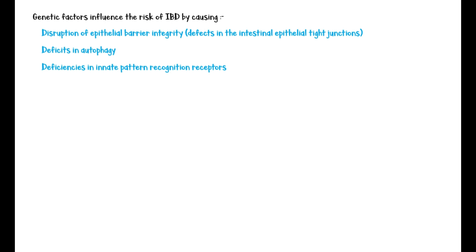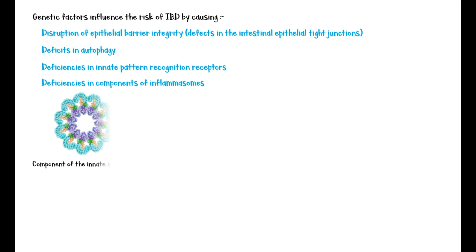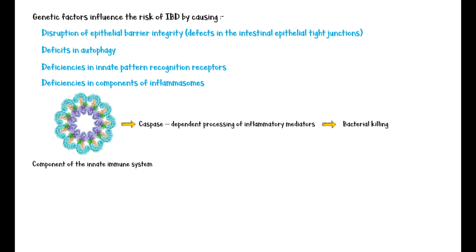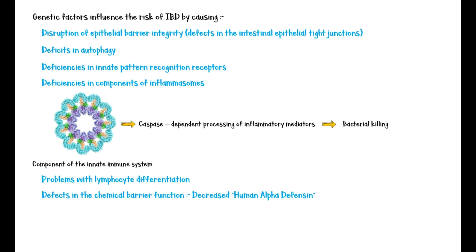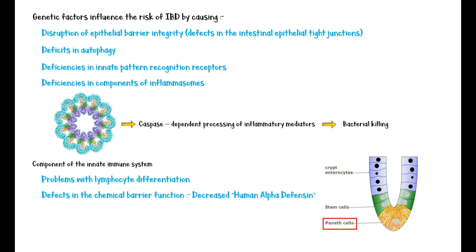Genetic factors also cause deficiencies in components of inflammasomes, which is part of the innate immune system and triggers caspase-dependent processing of inflammatory mediators to aid in bacterial killing. In addition, they lead to problems with lymphocyte differentiation and defects in the intestinal chemical barrier function, such as decreased human alpha-defensin levels. Alpha-defensin is a small peptide with antibacterial properties secreted by intestinal Paneth cells, and reduced levels may lead to inappropriate growth of bacteria that can trigger the disease.